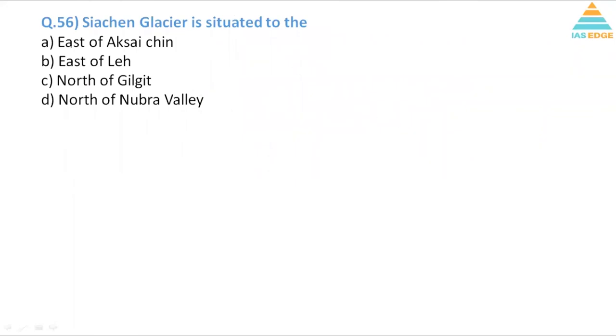Siachen glacier is situated where? Now remember, if you see, this is Siachen. Here we have Siachen glacier and here we have Leh. So if you see Siachen, it is west of Nubra Valley. Siachen glacier is west of Naskichen, so this is incorrect. East of Leh, so it is again west of Leh. North of Gilgit - now Gilgit is here. Nubra Valley is here, so naturally it is on the north of Nubra Valley, a very famous Nubra Valley.